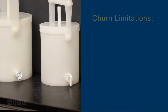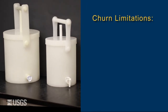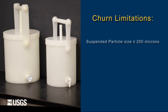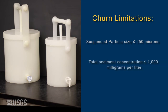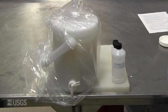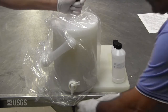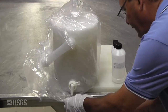There are several limitations to churns, including sediment size and concentration. The size of the sediment particles cannot exceed 250 microns. The total sediment concentration cannot exceed 1,000 milligrams per liter. The maximum volume for the 14-liter churn is 13 liters and the maximum volume for the 8-liter churn is 7 liters.